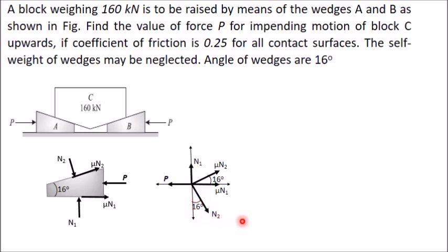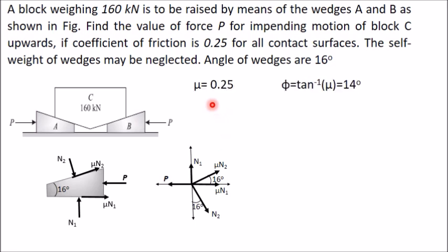Instead of showing the two reactions — normal reaction and friction force — separately, we can replace them with a single resultant force that makes an angle φ (angle of friction) from the normal reaction. The angle of friction φ = tan⁻¹(μ) = tan⁻¹(0.25) ≈ 14 degrees.